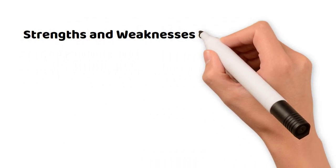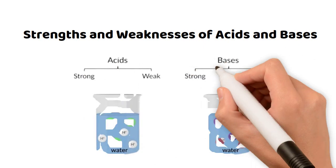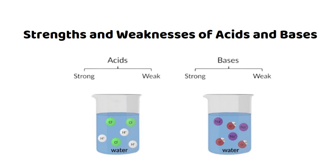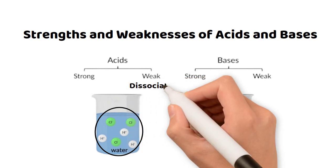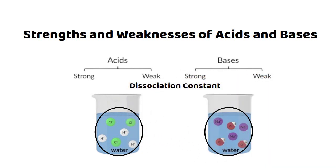Strengths and weaknesses of acids and bases. Acids and bases can be classified as strong or weak, depending on their ability to dissociate in solution. Strong acids and bases dissociate completely in solution, while weak acids and bases only partially dissociate. The strength of an acid or base is determined by its dissociation constant.